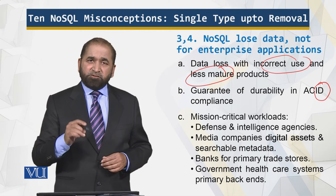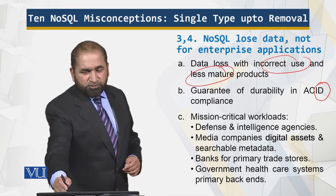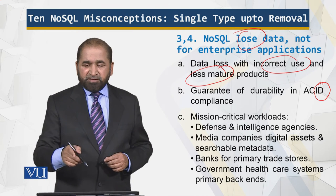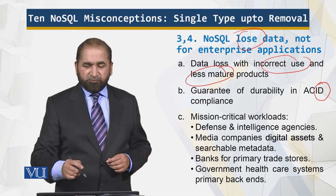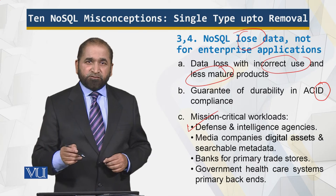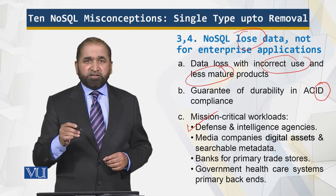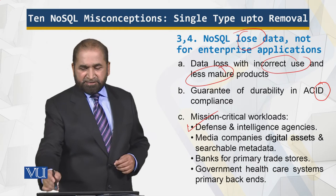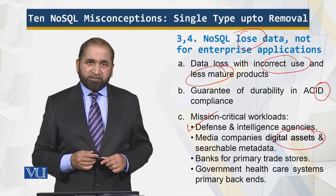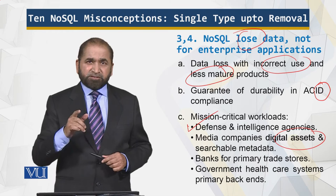NoSQL is used for mission-critical workloads. If there was a loss of data, why would defense and intelligence agencies be using it for mission-critical applications? Why would banks be using it for mission-critical applications? Why would media companies be using NoSQL for storing their digital assets? Why would government healthcare systems be using NoSQL? The answer is because there is no loss of data — it is a misconception.